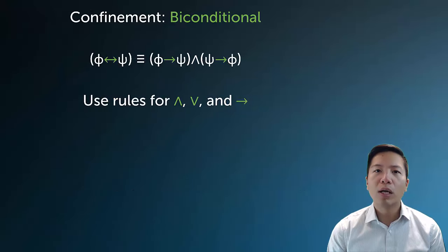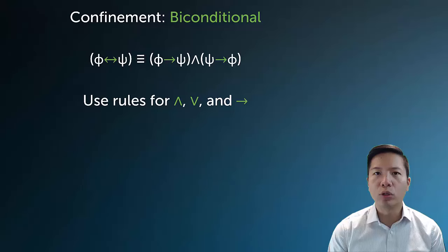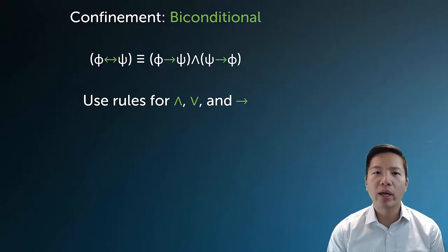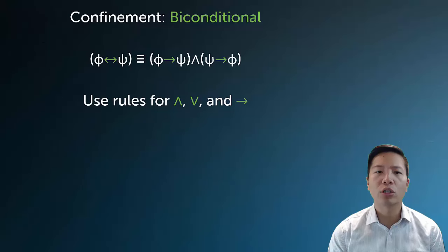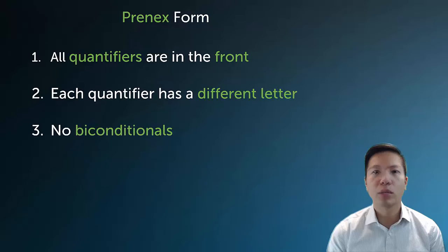For biconditionals, there are no particular separate rules. What we do is reduce a biconditional into conditionals joined by conjunction, and then use the confinement rules for conjunctions, disjunctions, and conditionals to navigate it.